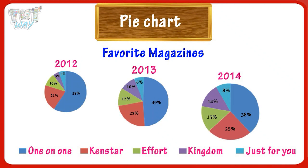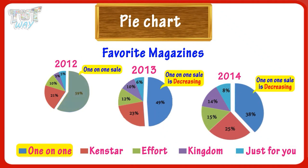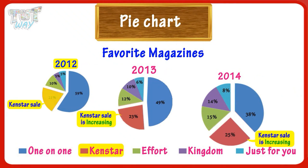From the three pie charts shown, we can clearly conclude that subscribers of One-on-One are decreasing: 59 percent in 2012, 49 percent in 2013, and 38 percent in 2014. So its subscribers are decreasing over these three years.